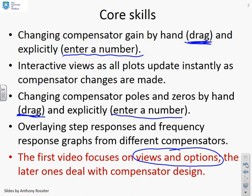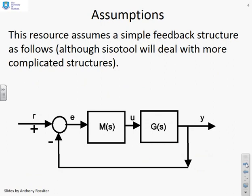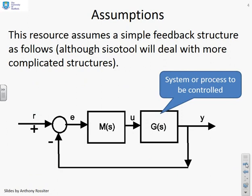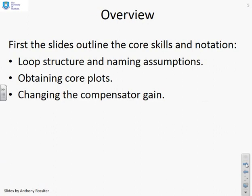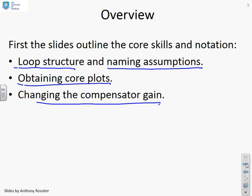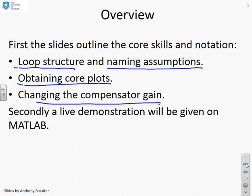Some assumptions: this resource assumes a simple feedback structure with a process called G(s), a compensator called M(s), a target R, an input U, and an output Y. The overview covers: core skills and notation used in SISOTOOL, loop structure and naming assumptions, how to obtain core plots, how to change compensator gain, and then a live demonstration on MATLAB going through these processes.